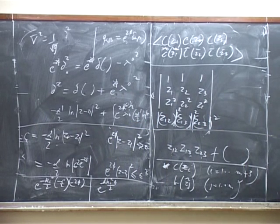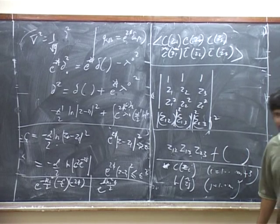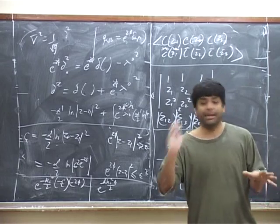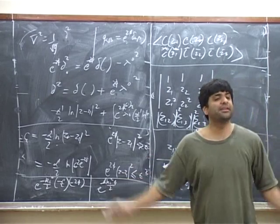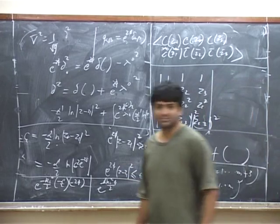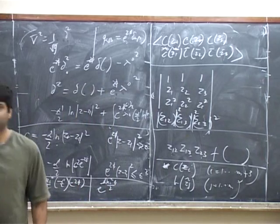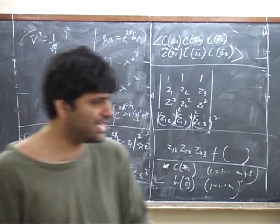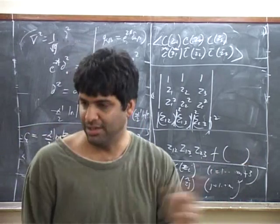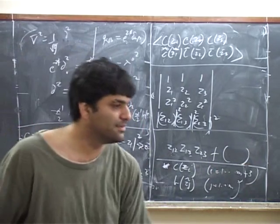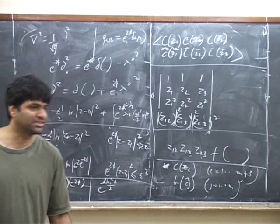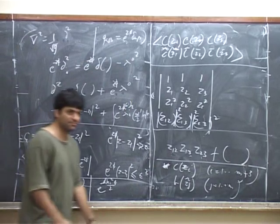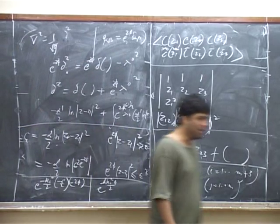So therefore the analytic function must be constant. Therefore the answer to this correlation function with arbitrary number of C's—so we have m plus 3 C's and m B's, which has determined it up to an overall constant—it's a product of all z's pairwise in the C's, product of all z's pairwise in the B's, divided by product of all z's pairwise between B's and C's. That's the answer, up to a constant.